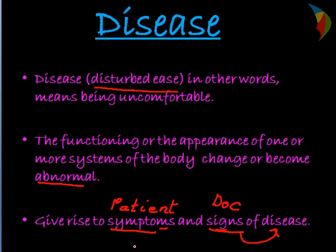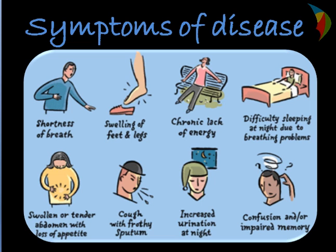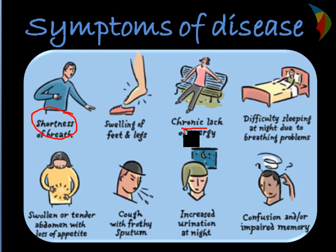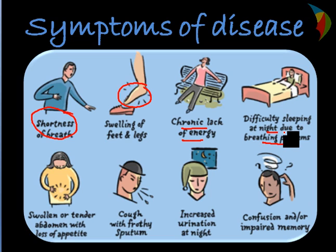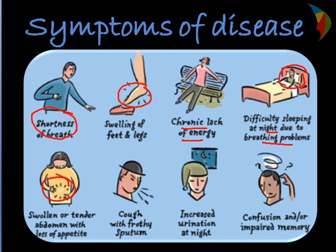Diseases are caused due to various abnormal functioning of the body, with various symptoms. For example, shortness of breath — you are not able to breathe properly — which leads to lack of energy. You may find swelling on the leg, abnormal sleeping habits, and not being able to breathe properly at night. There is also loss of appetite and indigestion. When you are affected by any disease, your digestive system also plays a major role — your food is not digested properly.